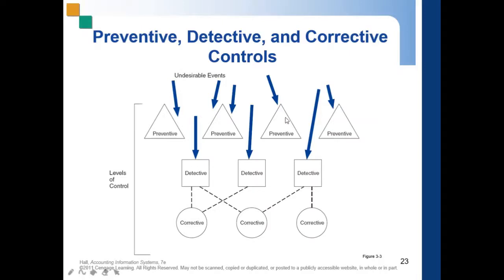We have the preventive control, which is the first line of defense. There are undesirable events — fraud, errors, mischiefs, access — and they must pass through the preventive controls first.